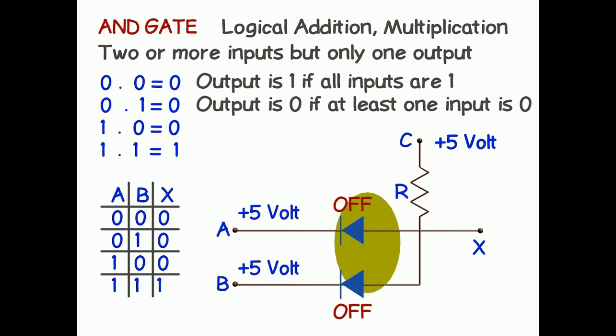Voltage of C that is plus 5V will also appear at X. As the supply voltage plus 5V appears at X, the output of the circuit is considered as high or logical one.